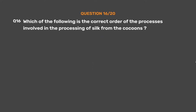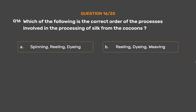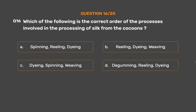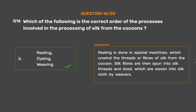Question No. 16. Which of the following is the correct order of processes involved in the processing of silk from cocoons? Option A: Spinning, reeling, dyeing. Option B: Reeling, dyeing, weaving. Option C: Dyeing, spinning, weaving. Option D: Degumming, reeling, dyeing. The correct answer is Option B: Reeling, dyeing, weaving. Reeling is done in special machines which unwind the threads or fibers of silk from the cocoon. Silk fibers are then spun into silk threads and dyed, then woven into silk cloth by weavers.